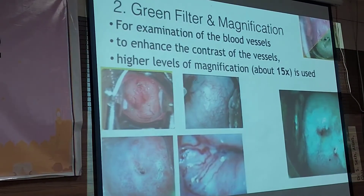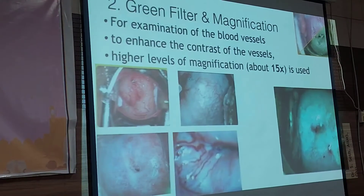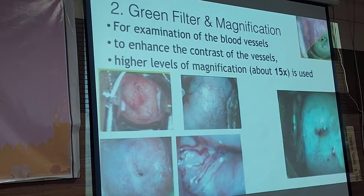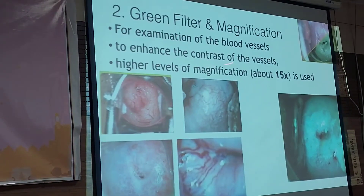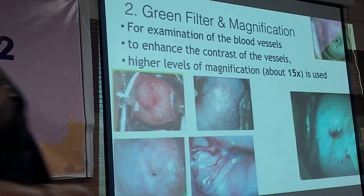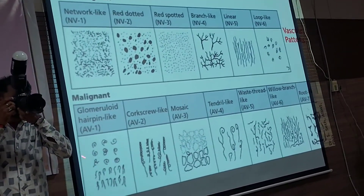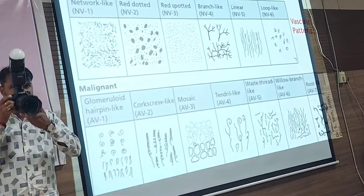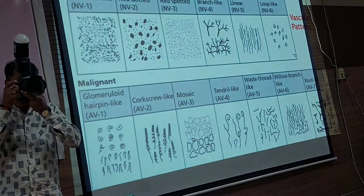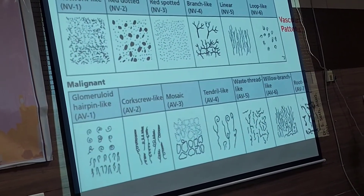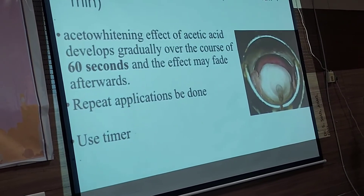Once the transformation zone is visualized, the first examination step is to view the cervical area with the green filter. The green filter enhances contrast of blood vessels — red absorbs the green light and vessels appear darker and more prominent. With increased magnification, abnormal vascular patterns such as hairpin-like vessels, abnormal branching, or corkscrew-like patterns suggest malignancy, while fine mosaic patterns or dots may indicate minor or even normal findings.